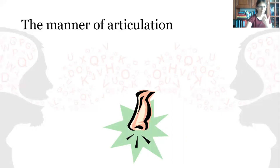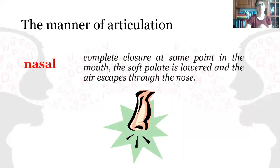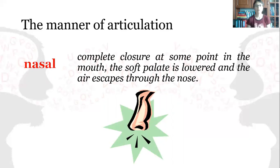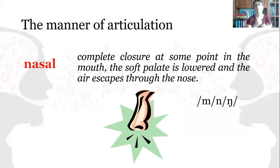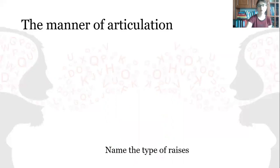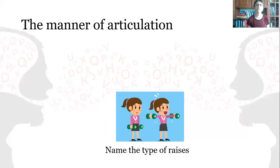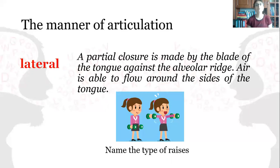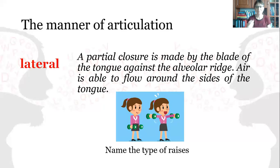For nasal sounds, there is a complete closure at some point in the mouth, the soft palate is lowered, and the air escapes through the nose. For lateral consonant sounds, a partial closure is made by the blade of the tongue against the alveolar ridge, and the air is able to flow around the sides of the tongue.